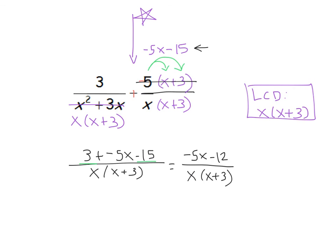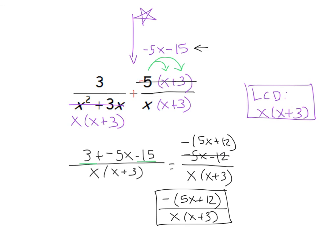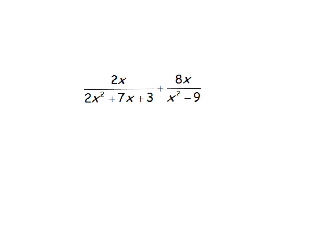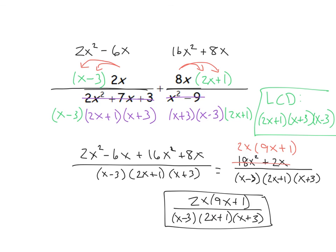We're going to combine like terms in our numerator. We have like terms of 3 and negative 15, so you can leave the negative 5x and it's going to be minus 12 when we combine our like terms, over x times x plus 3. Now we factor the numerator if possible. It is not possible to factor anything out except for perhaps a negative 1. So our final answer is negative 5x plus 12 in parentheses over x times x plus 3. I'm going to recommend that you try the next one on your own — walk through all those steps to find the LCD, make sure each denominator has the LCD, then add and simplify. If not, talk to me about it in class.